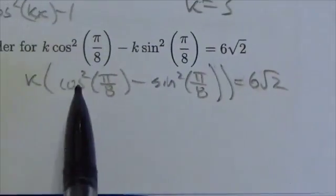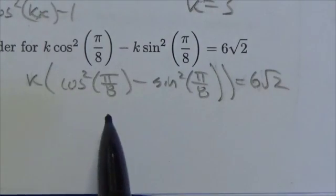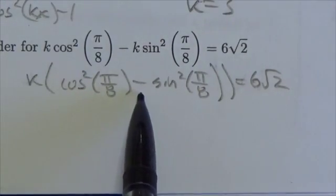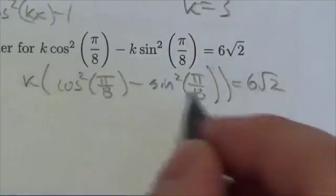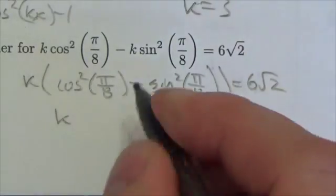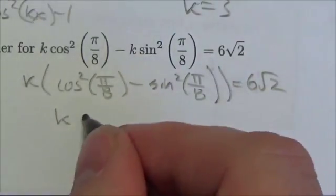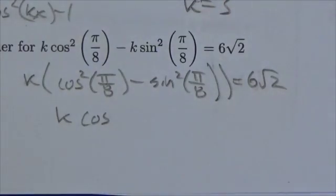Now, I'd be very tempted to say this is just equal to 1 and solve for k, but that's not true because of the subtraction. That's not a Pythagorean identity. This is one of those cosine double angle identities.